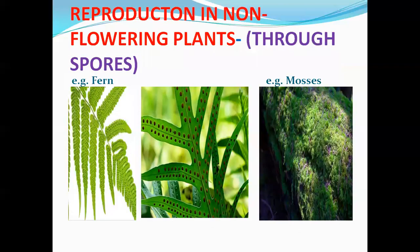Have you seen such plants? These are ferns and mosses — they are non-flowering plants. They do not have flowers and seeds, so they reproduce by tiny structures called spores. You will study more about spores in your higher classes.